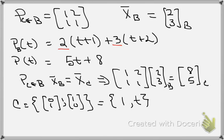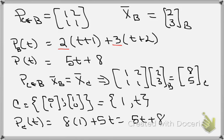Alright, so the coordinates tell me that the polynomial then written in terms of C, I'm just going to put that there for emphasis, should look like 8 times the first basis vector, so that's 8 times 1, plus 5 times the second basis vector, which is 5 times t, and voila, we do get 5t + 8. So we found the coordinates for our vector in question written in terms of C, by using the transition matrix P that takes B to C. Thank you.